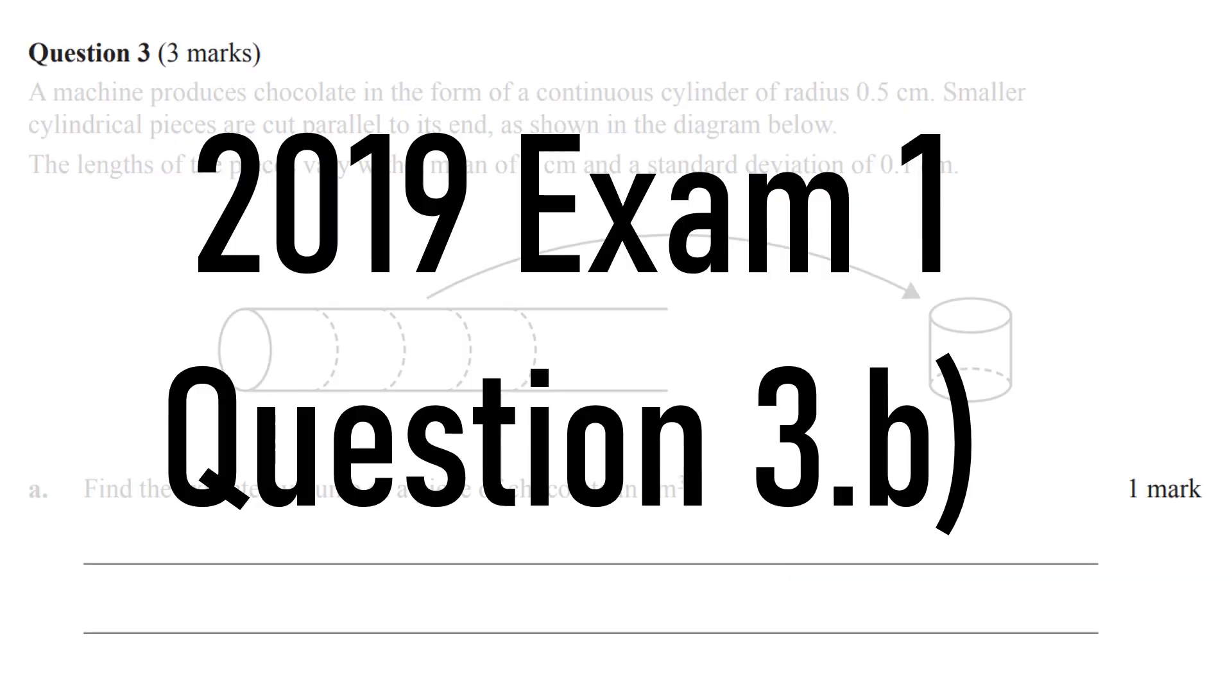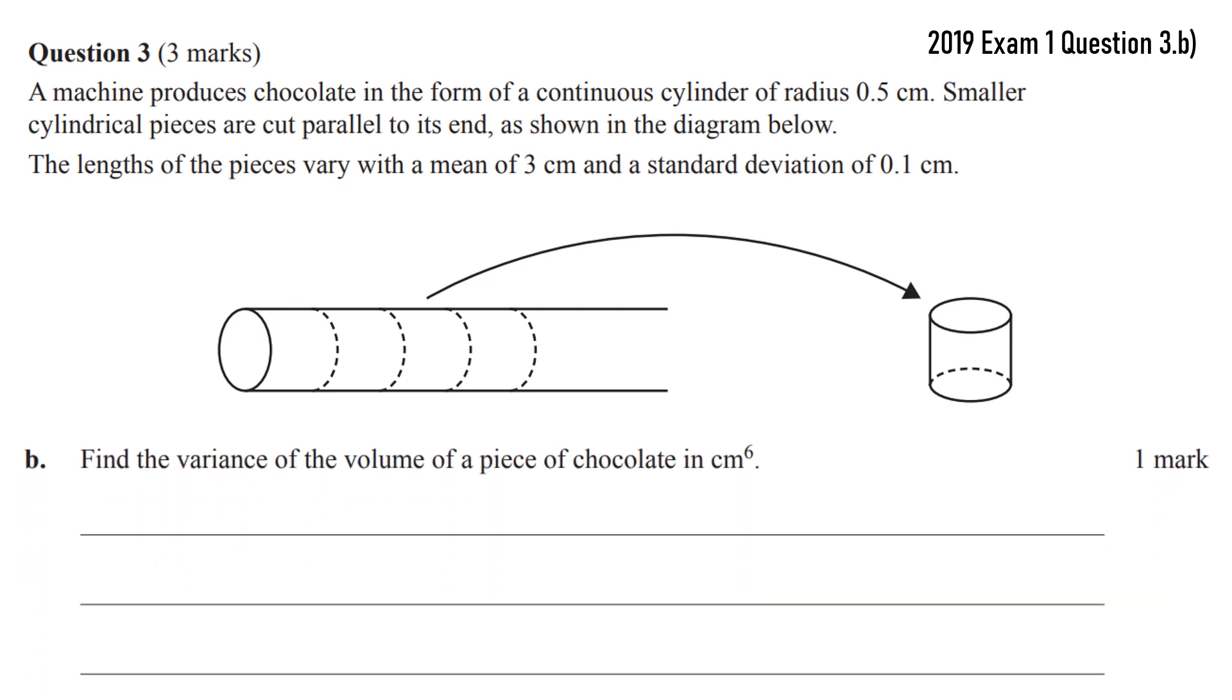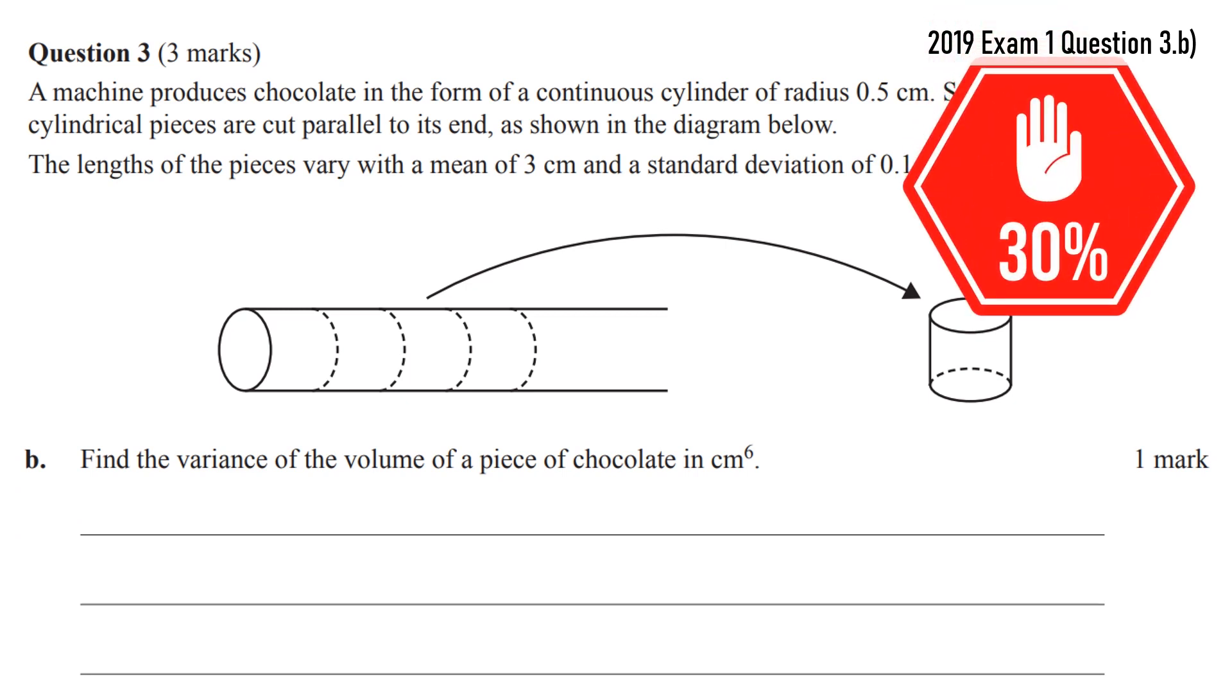First question, 2019 exam 1, question 3. It's about a machine that produces chocolate in the form of a continuous cylinder. Part A was to find the expected volume and students found that fine. The tricky one was part B which asked to find the variance. Only 30% of students answered this correctly.